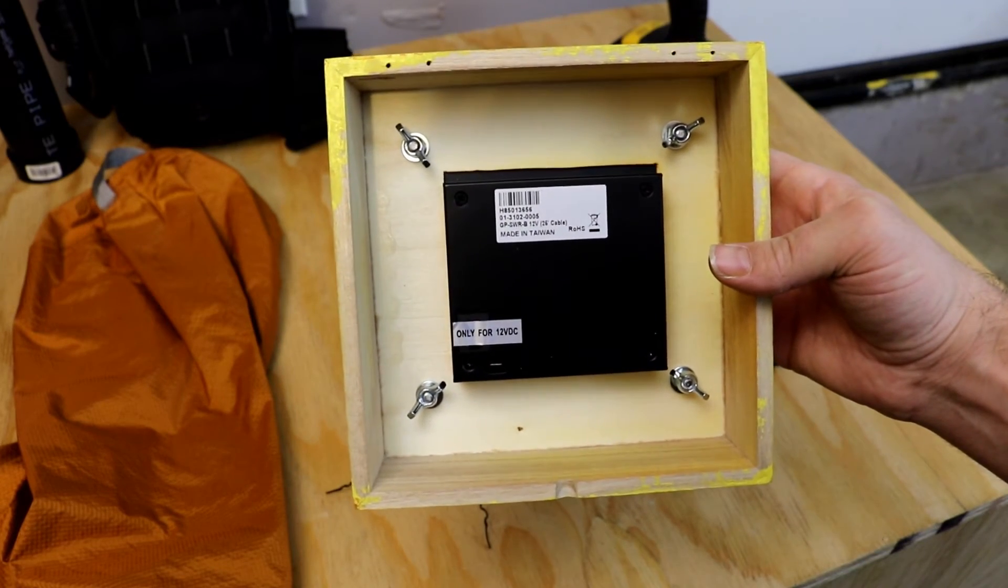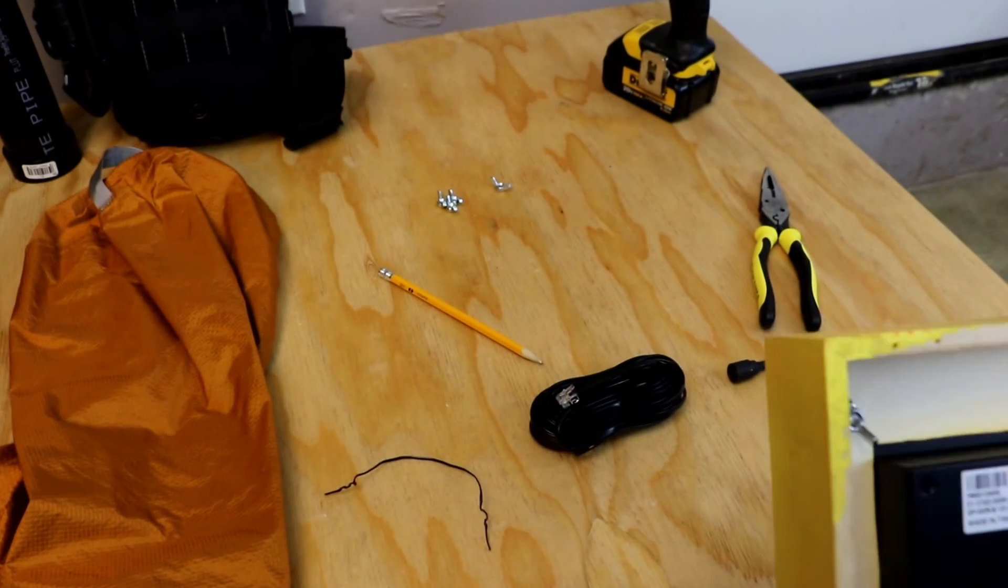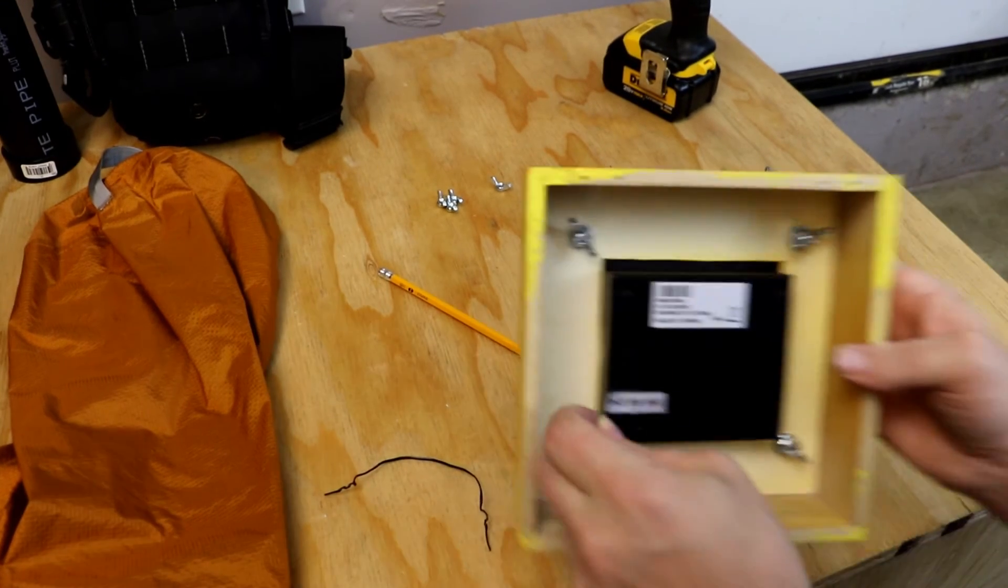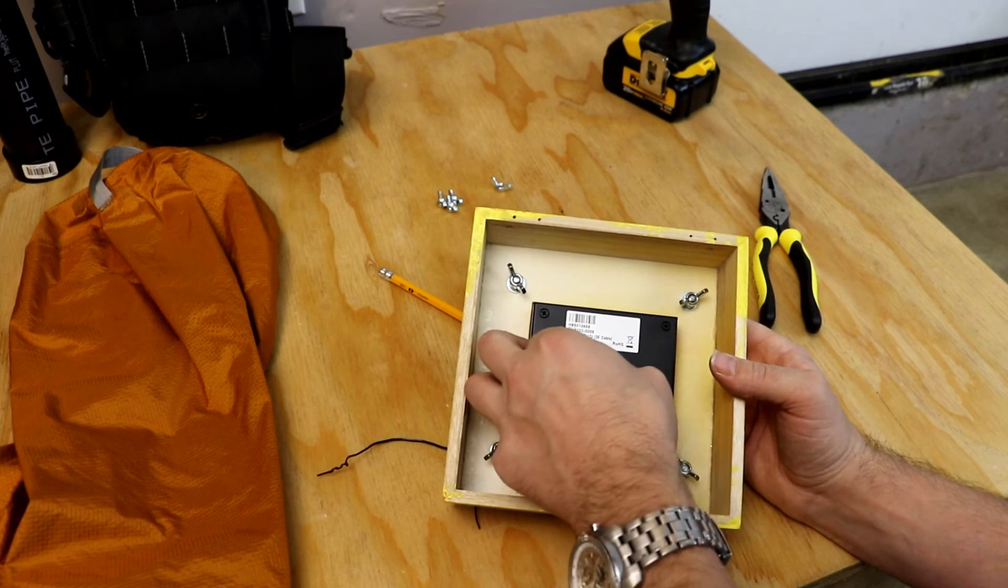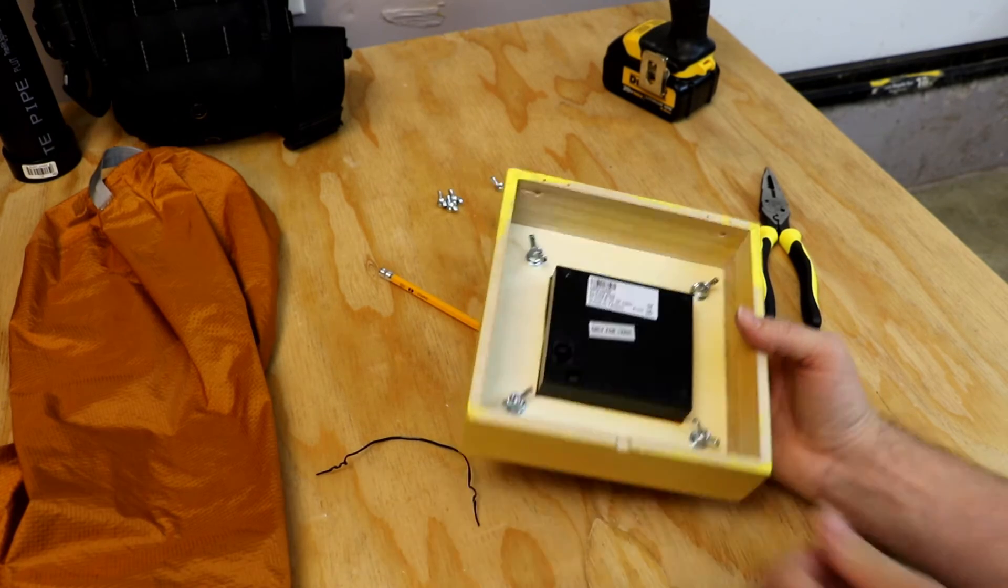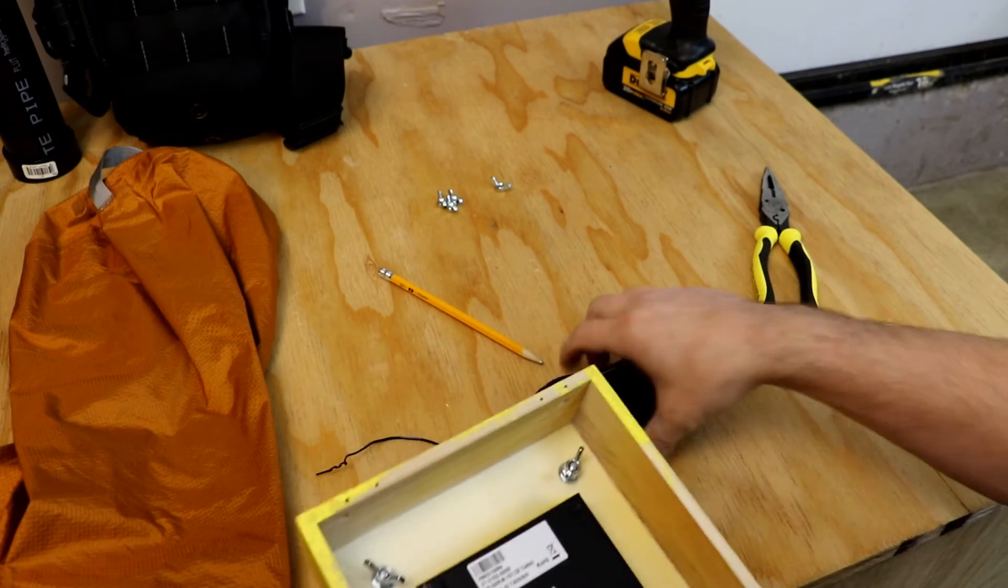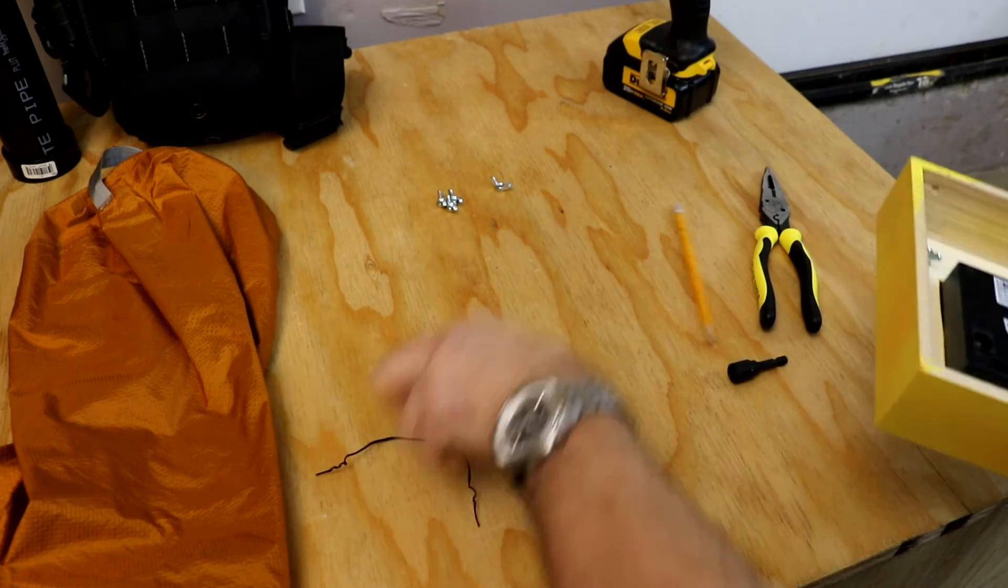All right, now that I've got all the wing nuts on there, I can go ahead and remove the little sticker here. It says 12 volt only. We'll just toss it there and save it. But from here...